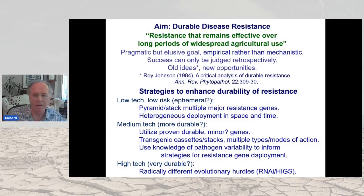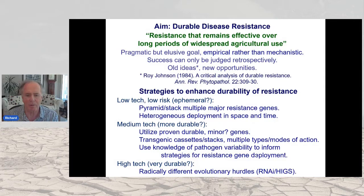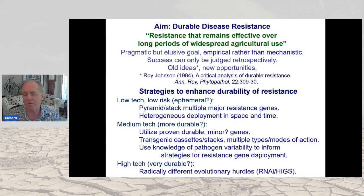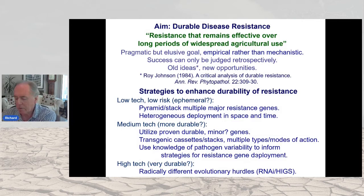We have a variety of strategies to increase the durability of resistance. The low-tech approach: classical resistance gene pyramiding — stack them and deploy heterogeneously in space and time. Medium tech: there are durable resistance genes out there we should incorporate into breeding programs; we can consider transgenic cassettes and use knowledge of pathogen variability to inform resistance gene deployment strategies. Higher-tech approaches involve RNAi and host-induced gene silencing.